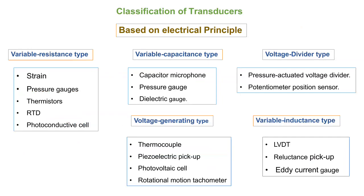In variable resistance type transducers, there will be a sliding contact. Based on the input, you get an output signal — like strain gauge for strain, pressure gauge for pressure, thermistor and RTD for temperature. The input causes a variation in resistance, and so these can be called electrically based transducers.